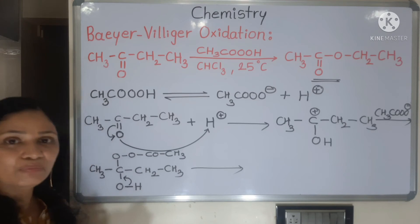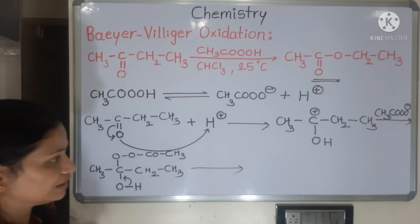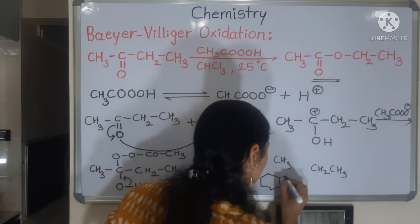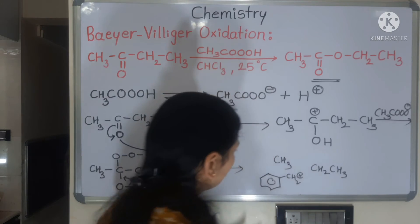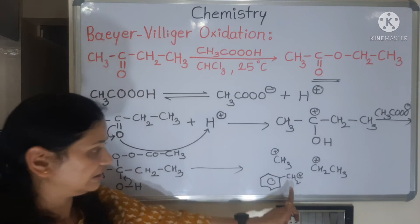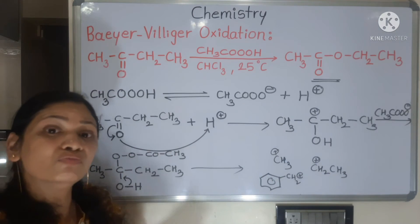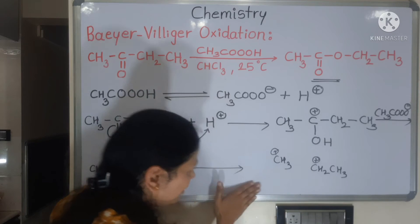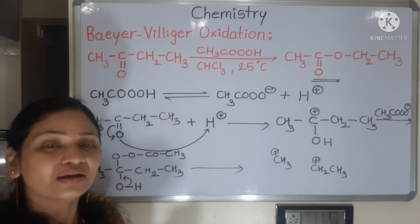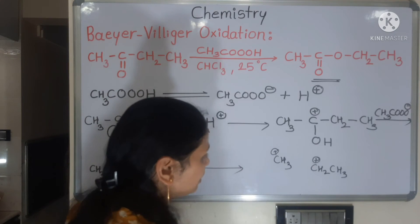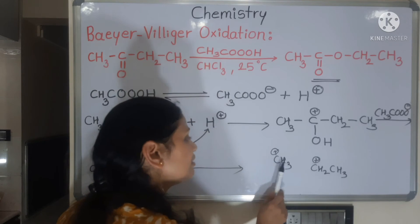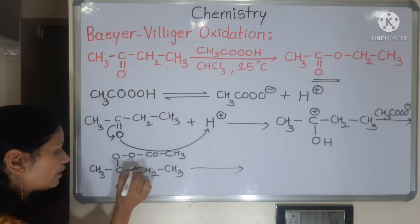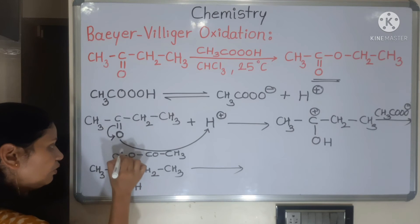Why does the bulkier alkyl group shift? Because the bulkier alkyl group has greater stability — think of carbocation stability. CH3, CH2CH3, or phenyl group CH2⁺ — which is more stable? The larger group is more stable as a carbocation. So CH2CH3 is more stable than CH3. That's why CH2CH3 group shifts. So whichever group is bulkier is more stable, and that group shifts to the oxygen.